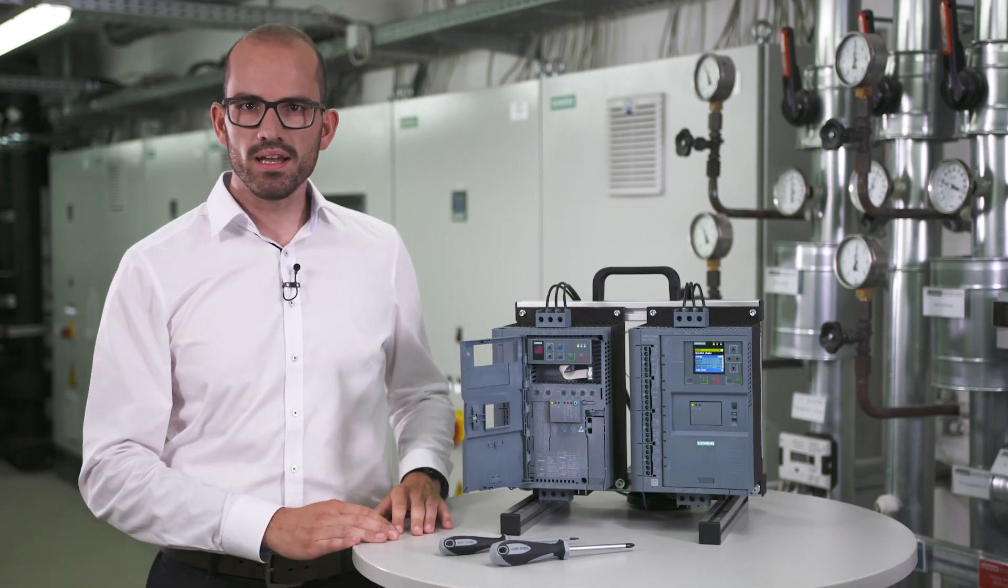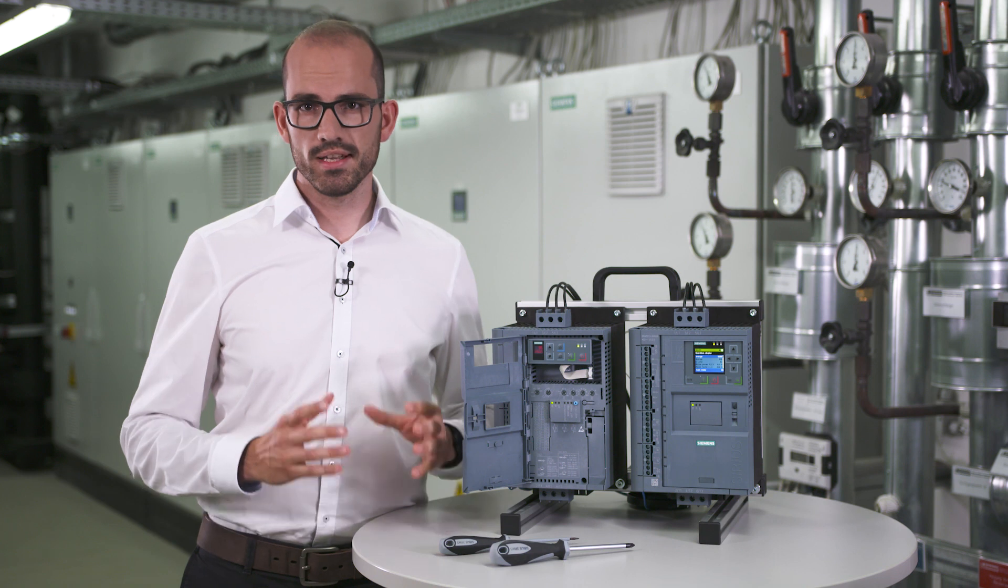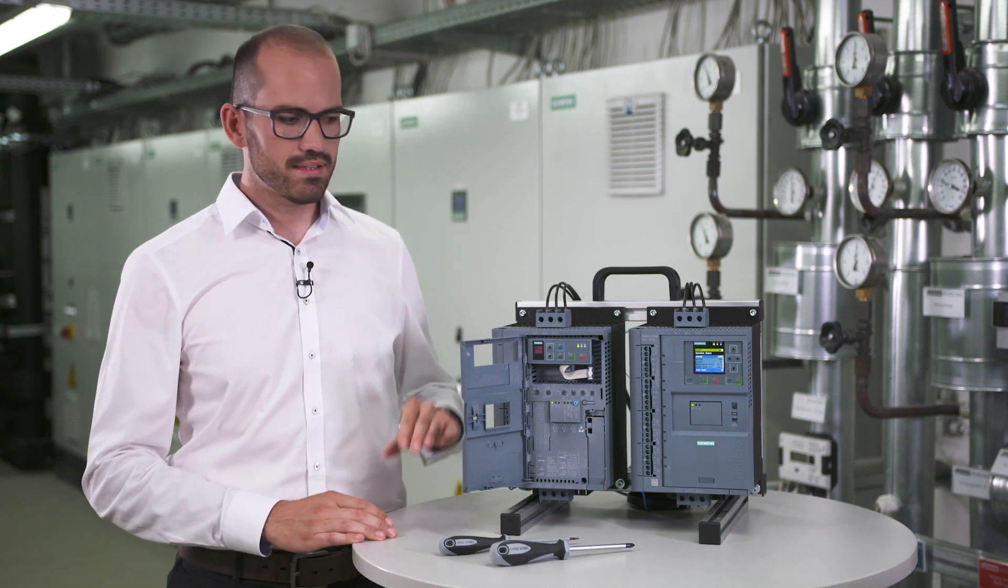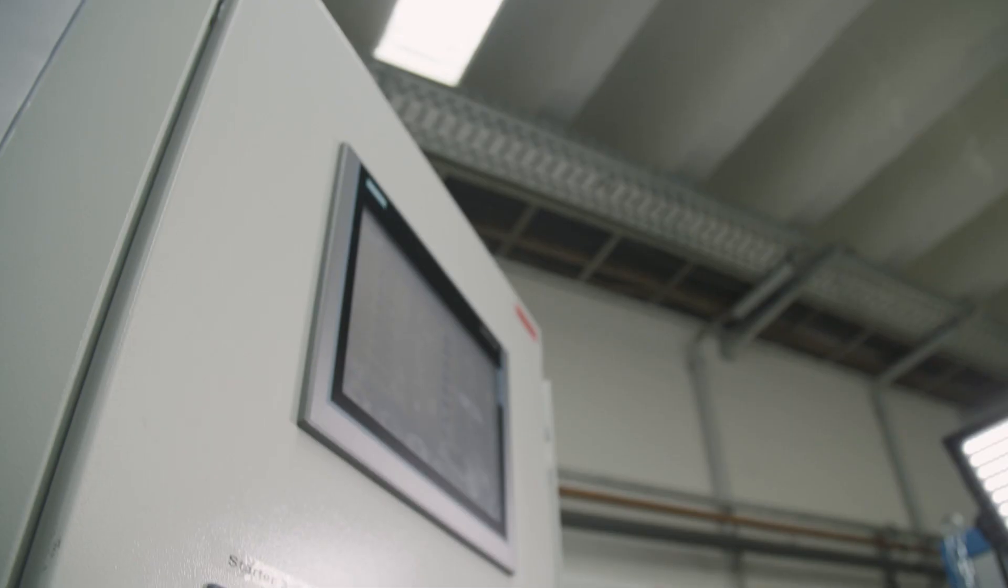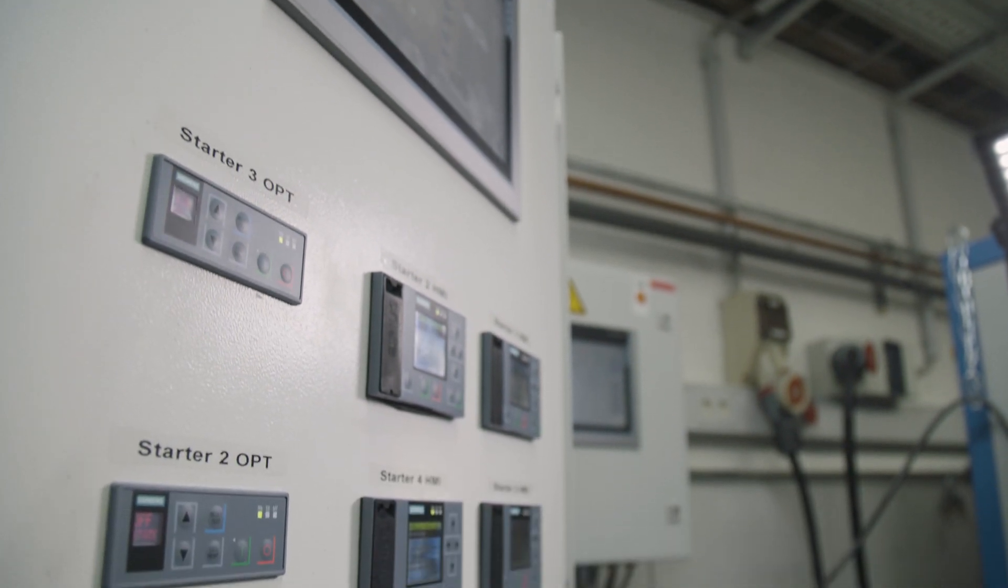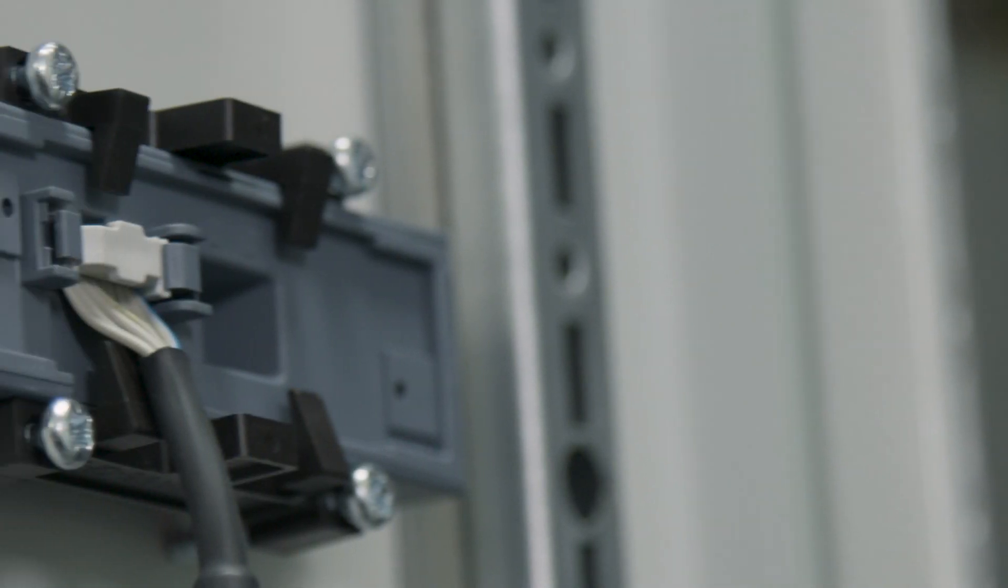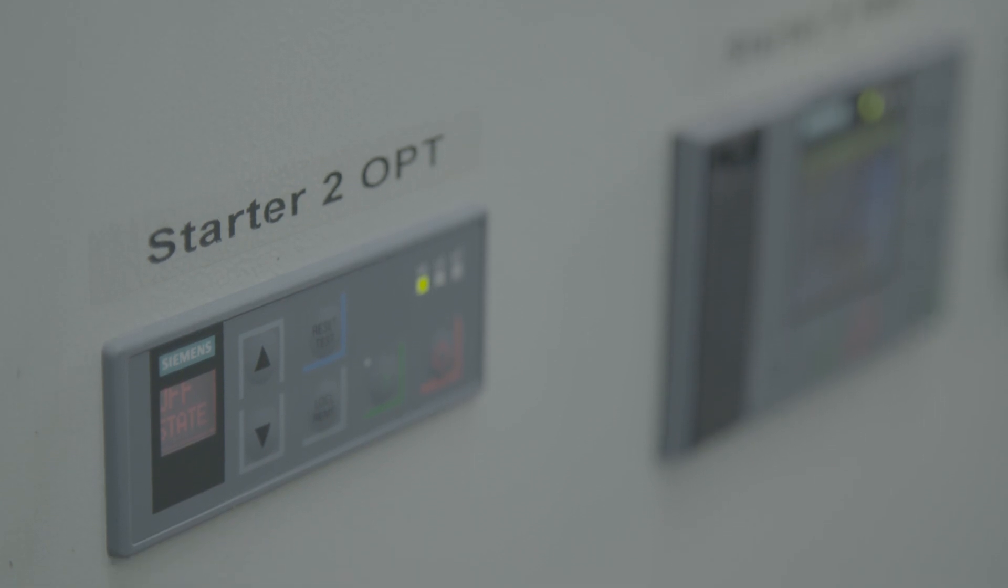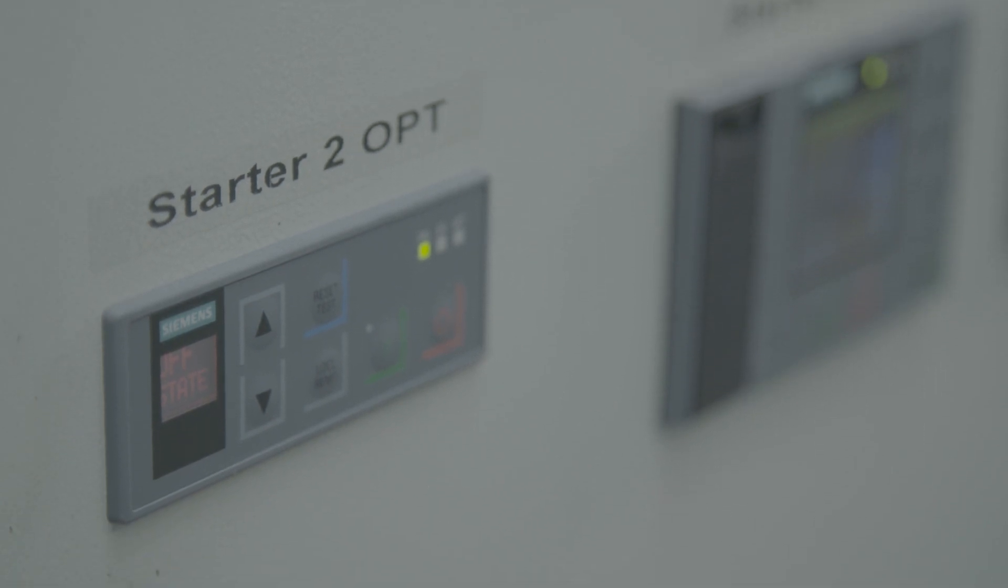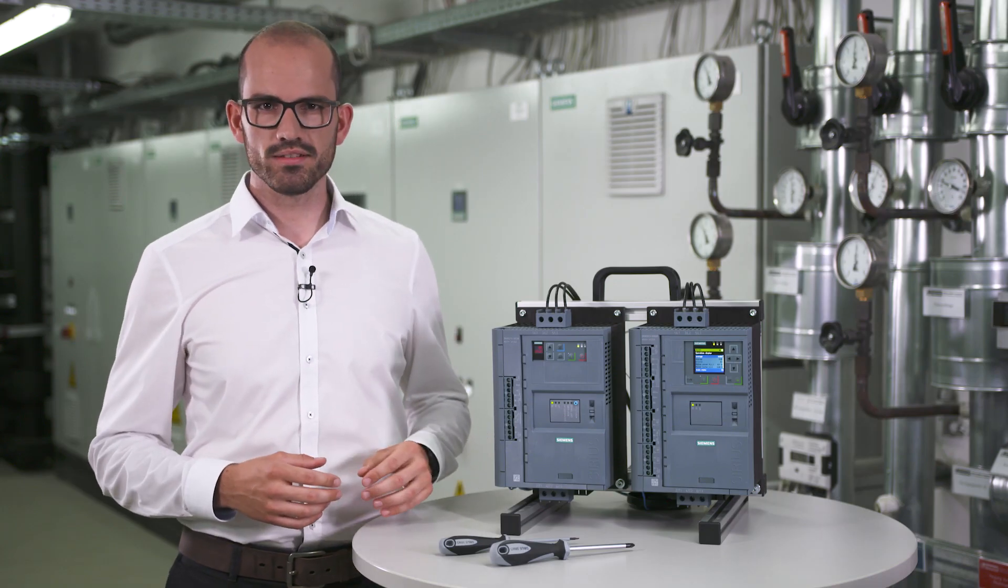The 3RW5 is designed to make your installation even easier. The same HMI can be plugged in front of the soft starter or even on the panel door. This allows you to monitor different values during operation like average or phase currents even when the panel door is closed.